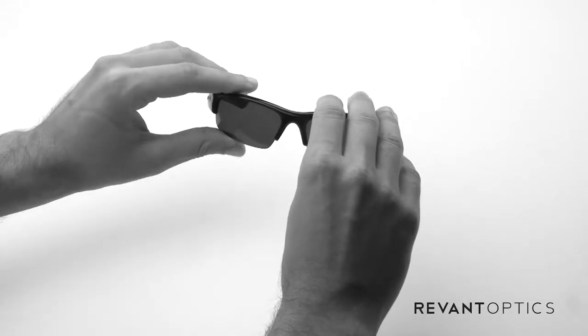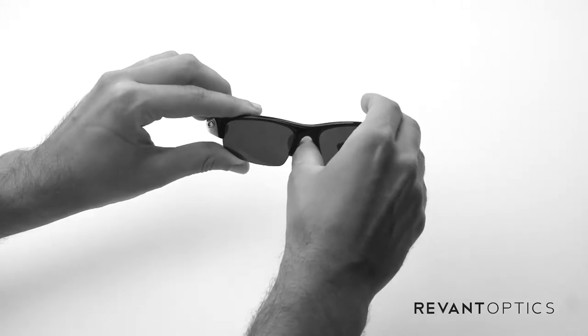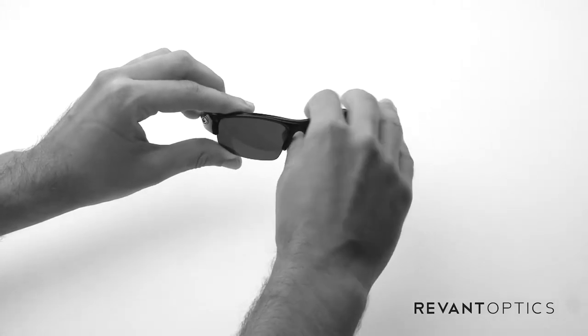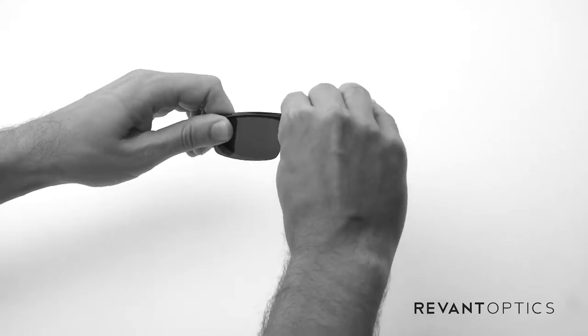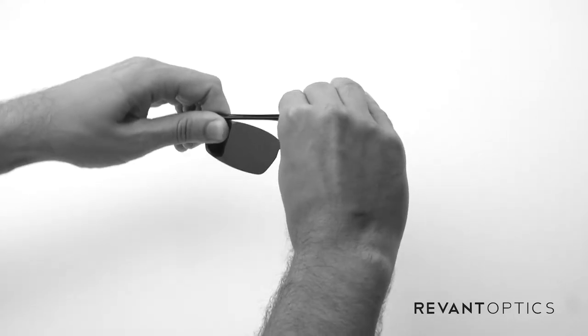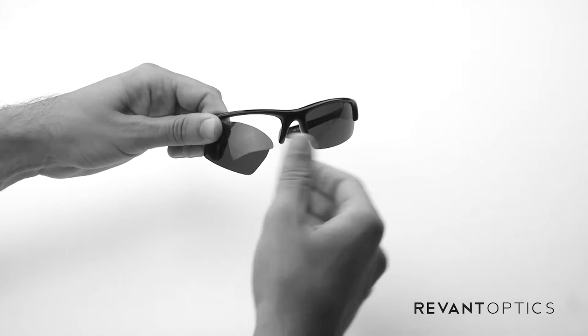The way you're going to take the lenses out initially is put your thumb in the middle of the frame and you're going to pull up on that part and push down on the outside and pop the lens right out.